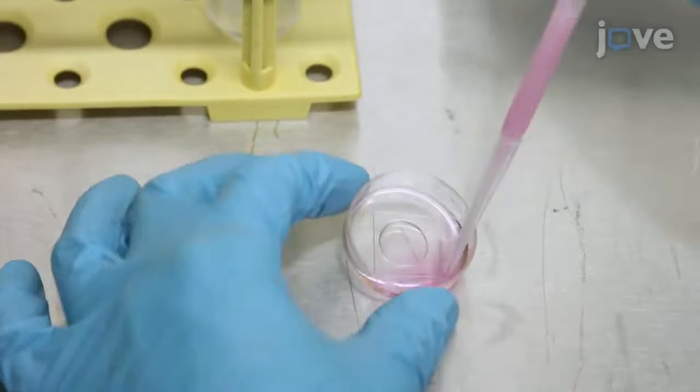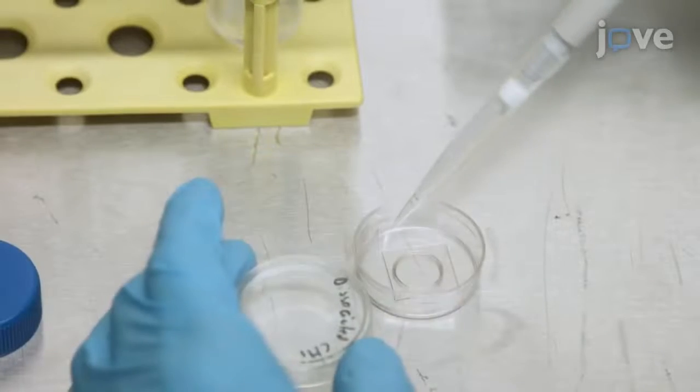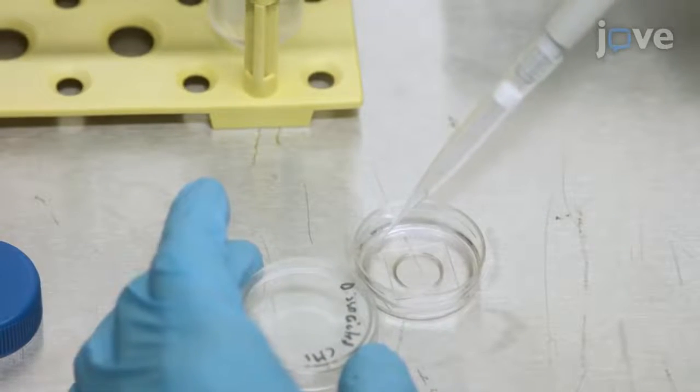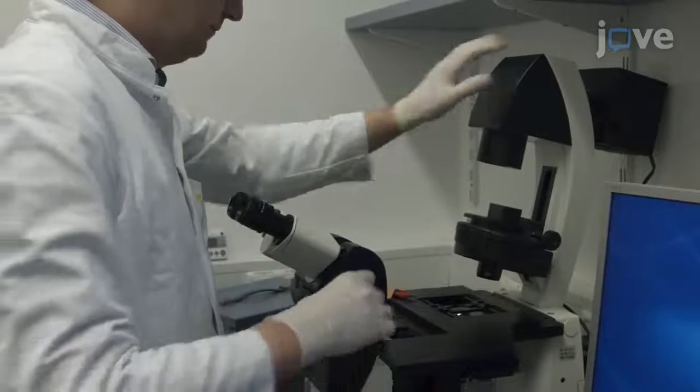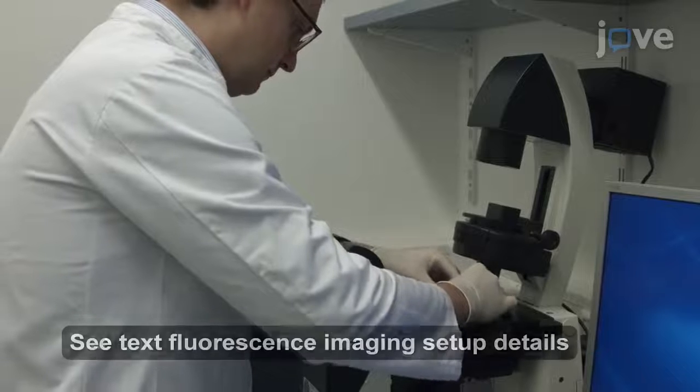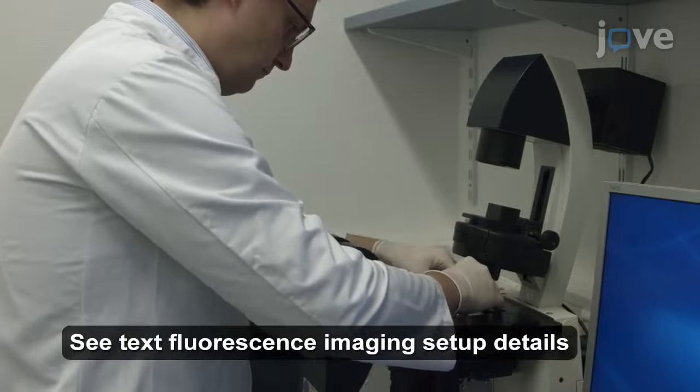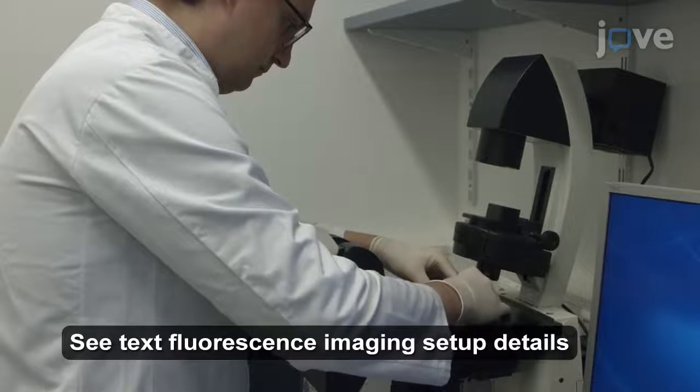Before imaging, exchange the cell culture medium with Tyrode solution supplemented with calcium and place the cardiomyocytes in an imaging chamber on the stage of an inverted epifluorescence microscope equipped with an image splitter.